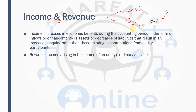Income is the inflow of economic benefit — it can be anything, for example interest income or rental income. But when you talk about revenue, revenue is the income from the ordinary course of business — income arising in the course of an entity's ordinary activities. For example, if my business is to sell cars, the income from the sale of those cars should be recognized as revenue in the statement of profit or loss.